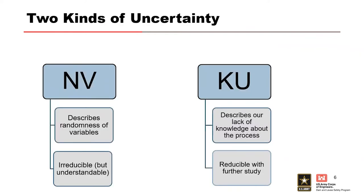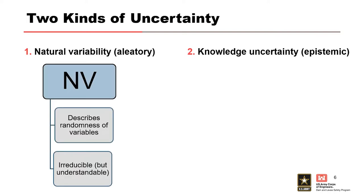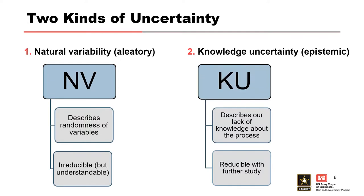There are two main types of uncertainty that affect the study of hydrologic hazard. The first is natural variability, or aleatory uncertainty. The second is knowledge uncertainty, or epistemic uncertainty. Natural variability describes the randomness of natural processes such as fluctuations in precipitation or temperature. While we can't reduce uncertainty from natural variability, we can understand it. Knowledge uncertainty describes our lack of knowledge or lack of data, and it can be reduced with further study and measurement.